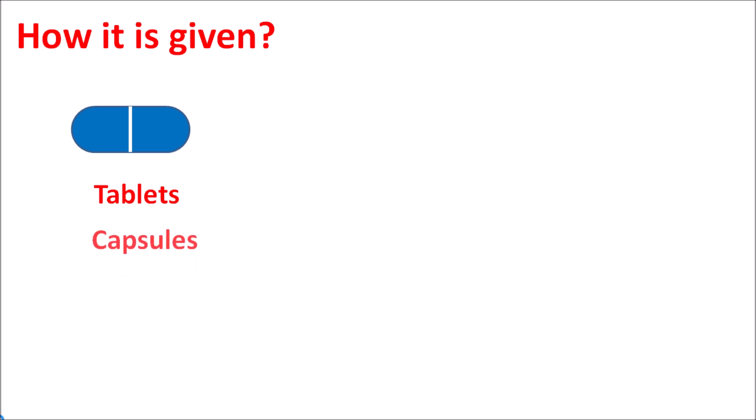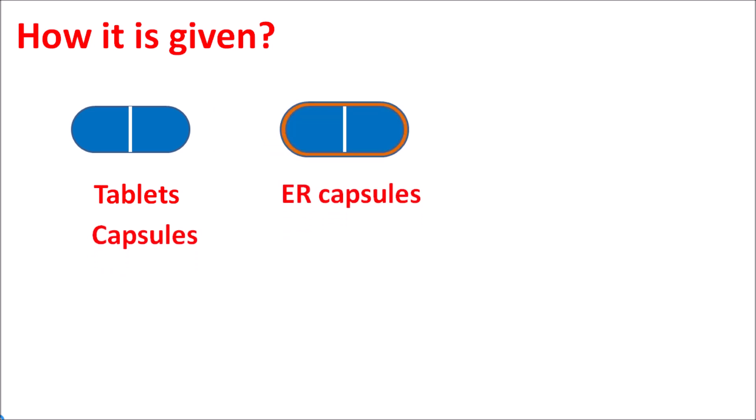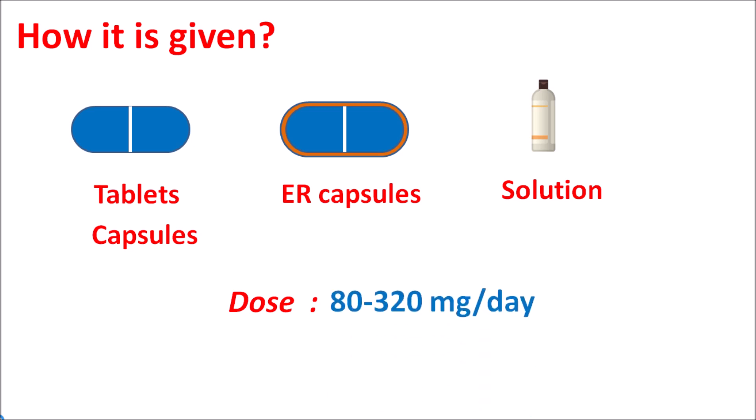How is it given? This drug is available as tablets as well as capsules, including extended-release capsules where the drug is slowly released. It is also available as a solution. The dose of propranolol depends on the clinical indication. For hypertension and some cardiovascular disorders it may be started at an 80 mg initial dose, but in severe disorders the dose may be increased. The general dose range is variable, typically 80 to 320 mg per day given as divided doses.